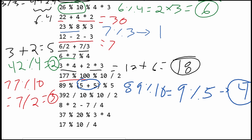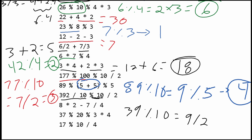Next, we have 392 divided by 10, which gives us 39. Then we take the modulus of 10 using that result, and this gives us 9. We divide that by 2, and this gives us the value of 4 as well.